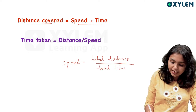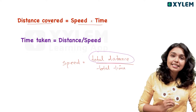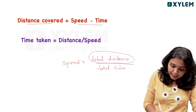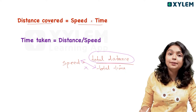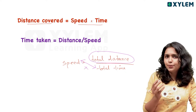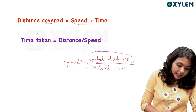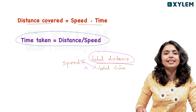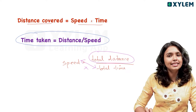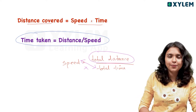We can divide the time to get distance. The equation is: total distance equals speed multiplied by time. And the time taken is equal to distance divided by speed. Now you know the three equations.